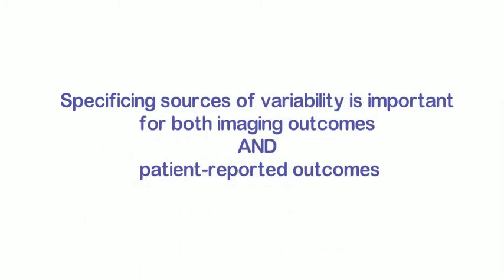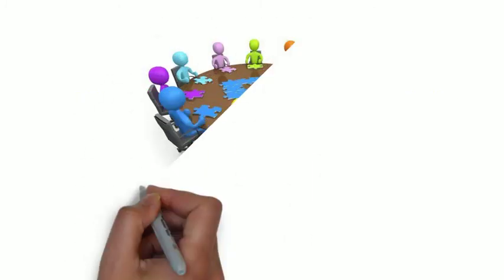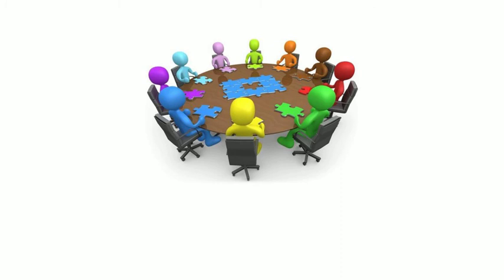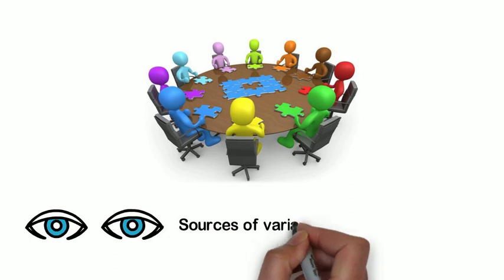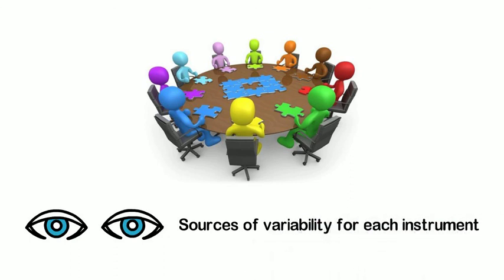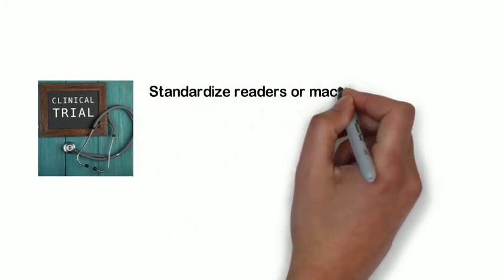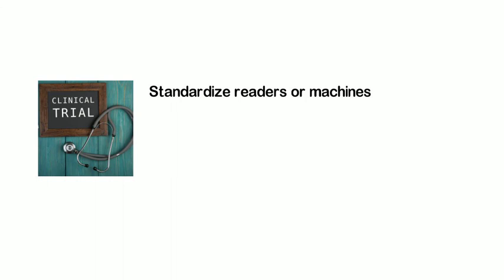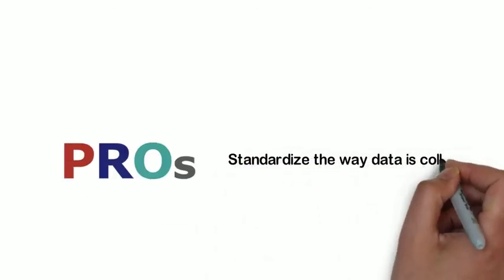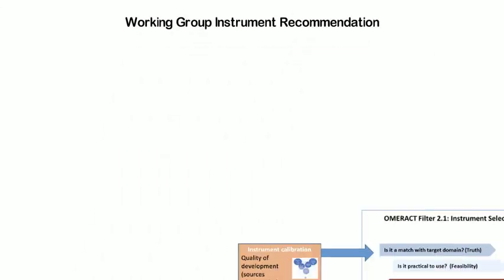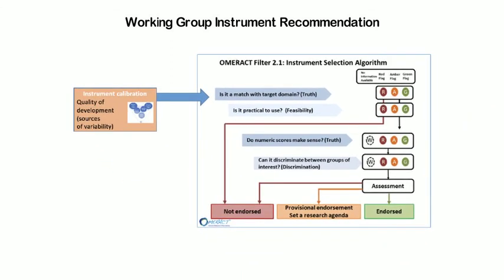So what does this mean for instrument selection at OMRACT? We will be encouraging groups at OMRACT to look at these different sources of variability for each of their instruments and to try to assess their impact. For clinical trials, we can sometimes standardize readers or machines to ensure comparability across the results of subjects in a trial, or we could use multiple readers and use the mean of their scores. For patient-reported outcomes, we might standardize the way the data is collected. In future, these recommendations could go along with the final recommendation for the instrument made by the working group.